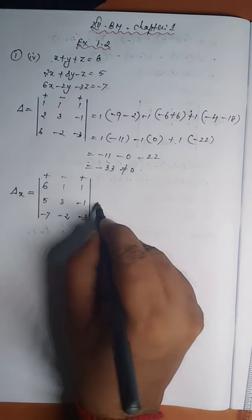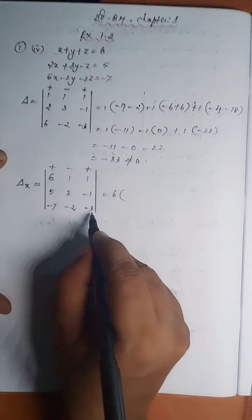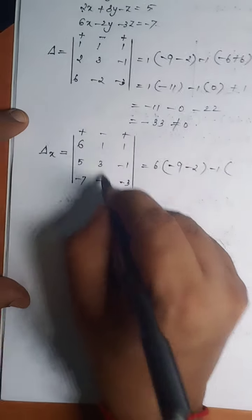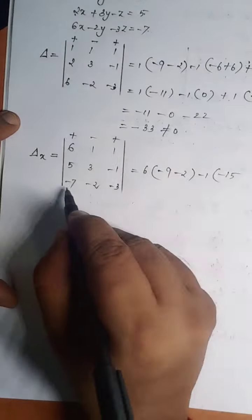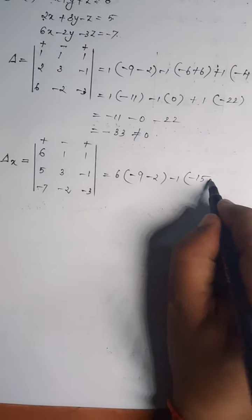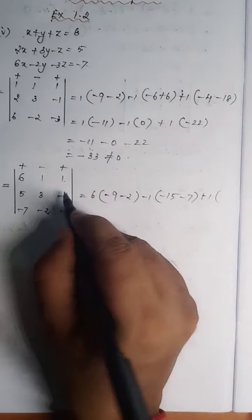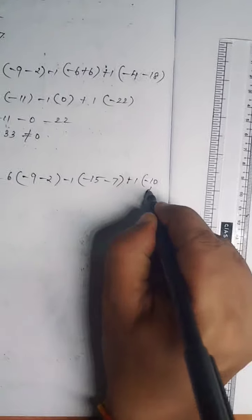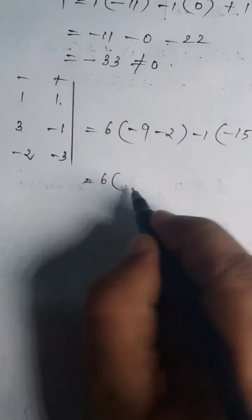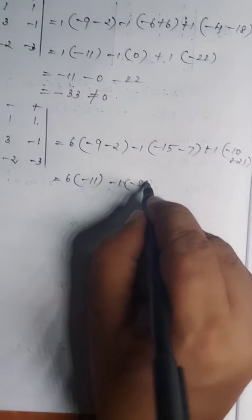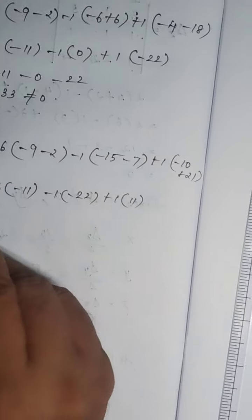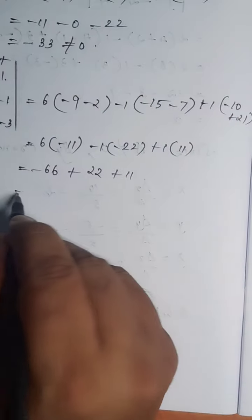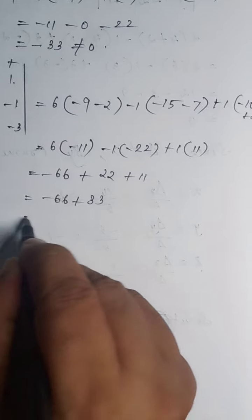The second and third columns of delta remain as is: 1, 3, minus 2 and 1, minus 1, minus 3. Expand with plus, minus, plus. 6 into — leave this column and row — multiply: minus 9 and minus 2 becomes minus 2. Minus 1 into — leave this column and row — minus 15; minus 7 into minus 1 is plus 7. Finally plus 1 into — multiply: minus 10; minus 7 into 3 is minus 21, becomes plus 21. That gives 6 into minus 11 equals minus 66, plus 22, plus 11 equals minus 66 plus 33: del x equals minus 33.